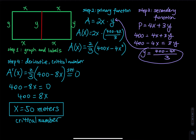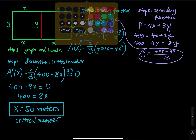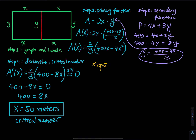In the previous problem I used the second derivative test, but is there an alternative method? The answer is absolutely yes. If you do not want to use the second derivative test, you can test the absolute minimum or maximum using the domain. We have to figure out the domain. Step 5: find the min or max. This time, let's not use the second derivative test.